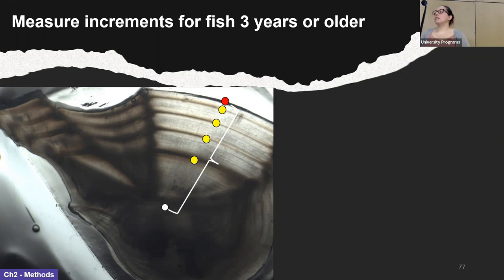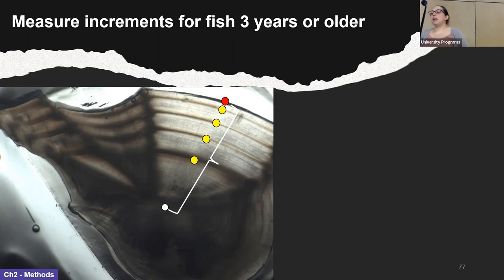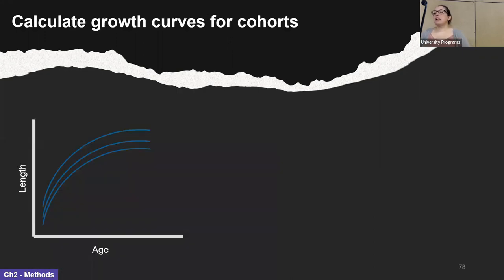This method assumes that otolith growth is proportional to fish growth, which I will be testing as part of my methods. The process gives us a database of annual growth and length at age for ages three and up. We are limited to ages three and up because the first ring on the otolith is unreliable — the fish could have been born any time during the six-month spawning period, so we don't know how much time elapsed between the core and the first band. To be cautious, we also do not count the first band as reliable, so the earliest we can estimate growth is between ages two and three.